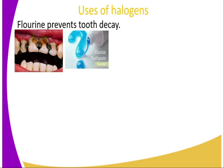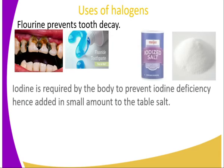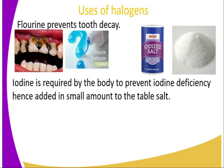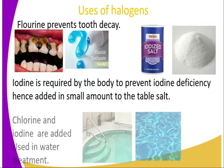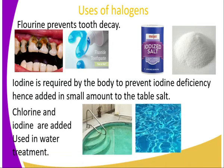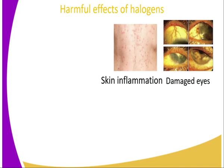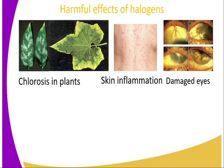Some of the uses of halogens: fluorine is used in the manufacture of toothpaste and helps prevent tooth decay. Iodine is required by the body to prevent iodine deficiency and is therefore added in small amounts to table salt — this is what we call iodized salt. Chlorine and bromine are added to water for treatment, used in swimming pools as well as sewage treatment.